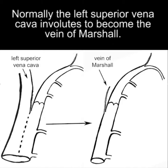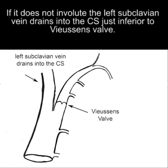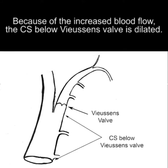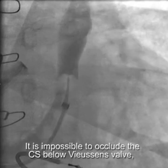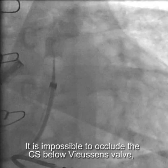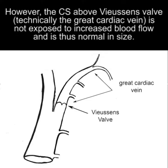Normally, the left superior vena cava involutes to become the vein of Marshall. If it does not involute, the left subclavian vein drains into the CS just inferior to Vucin's valve. Because of the increased blood flow, the CS below Vucin's valve is dilated, and it is impossible to occlude the CS below Vucin's valve.